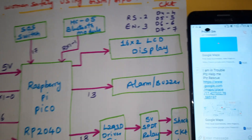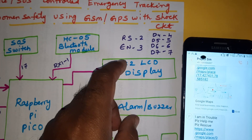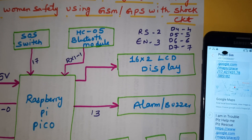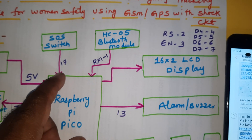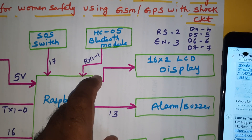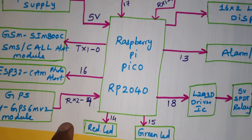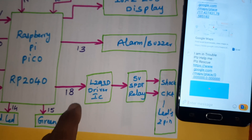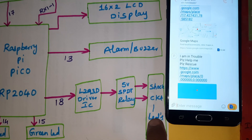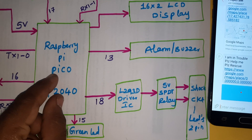We have one red LED and one green LED indicator, and one alarm. We are using a 16x2 LCD character display - whatever process is going on will be displayed on the LCD, connected to RS, enable, D4, D5, D6, D7 on pins 2, 3, 4, 5, 6, 7. The SOS button is on GPIO 17. The HC05 Bluetooth module uses serial communication 0 and 1. The alarm is on pin 13. We also have an L293D quadruple H-bridge driver IC and a 5-volt relay coil for the shock circuit.